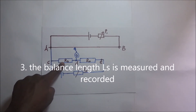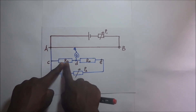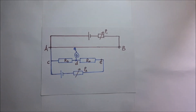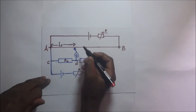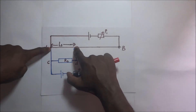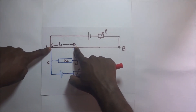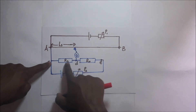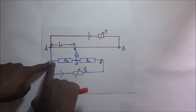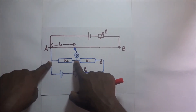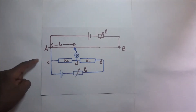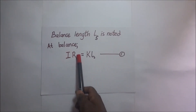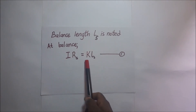Since the balance length corresponds to the standard resistor RS, we call it LS. At balance, the potential difference across the slide wire equals k times LS, which must equal the PD across RS, which is I times RS. So our first expression is: k·LS = I·RS, meaning the PD across the resistor equals the PD across the balance length.